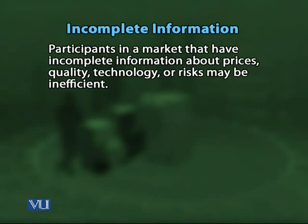The next important source of market failure is incomplete information. For the market to function efficiently, all participants — consumers and producers — must have complete information about prices, quality, and the source of products. For instance, in the case of medicines, information about possible side effects should be provided.